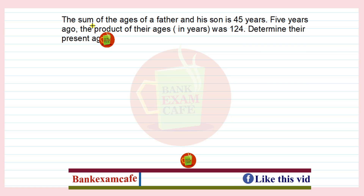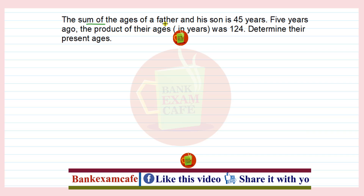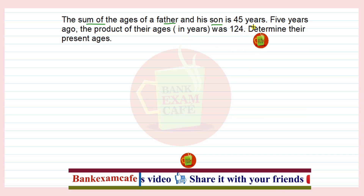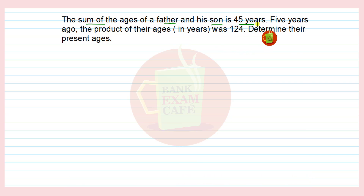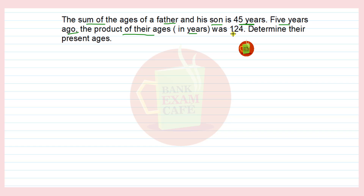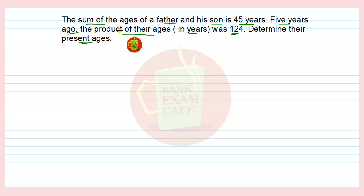Here is the question on the screen: The sum of the ages of a father and his son is 45 years. Five years ago, the product of their ages in years was 124. Determine their present ages. It is given that the sum of the ages of the father and his son is 45 years.